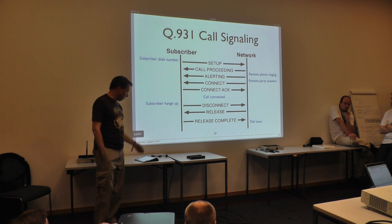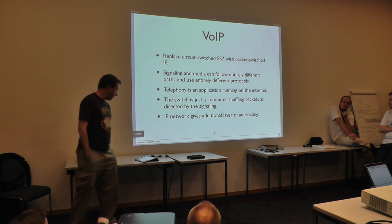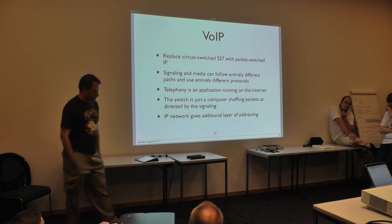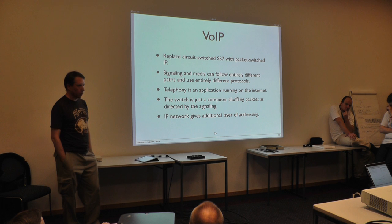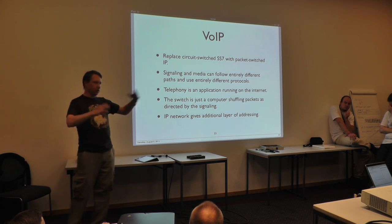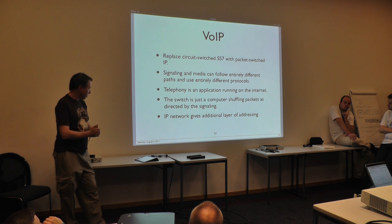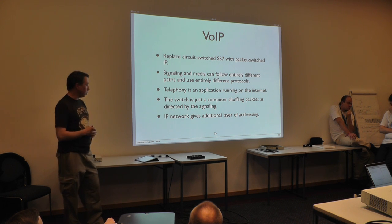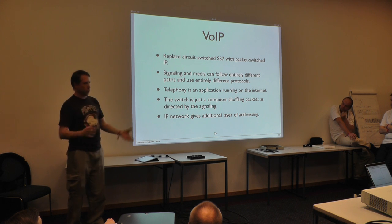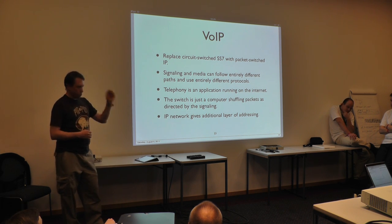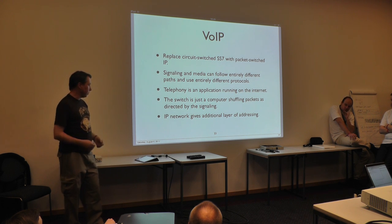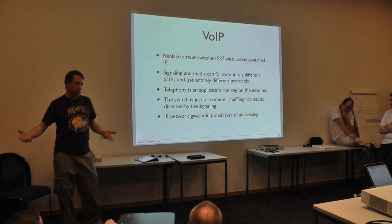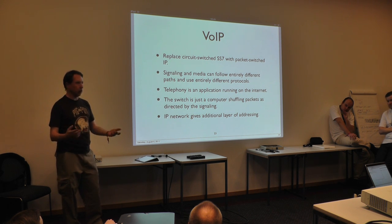So, what's wrong with that? Why do we need Voice over IP? Basically, the key part is you're going to replace the synchronous lines in SS7 with packet-switched lines and run them over an IP network. Like SS7, signaling and media can follow entirely different paths and use entirely different protocols. Your telephone network is now just an application running on top of a general-purpose computer network, and the switch is just a computer shuffling packets around. The main difference from SS7 is that VoIP is designed to run on top of IP networks instead of synchronous lines like T1s.